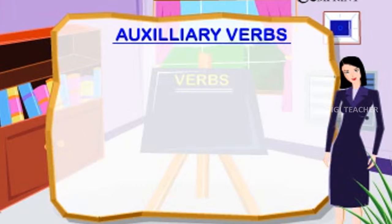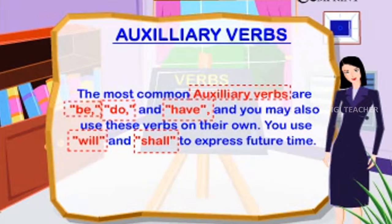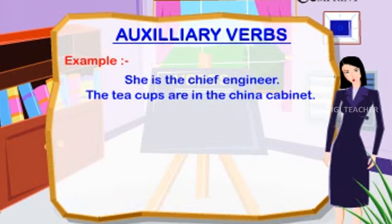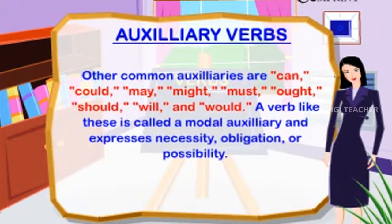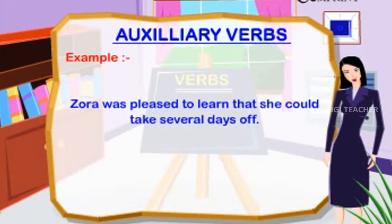Auxiliary verbs. The most common auxiliary verbs are be, do, and have. You use will and shall to express future time. Examples: 'She is the chief engineer.' 'The teacups are in the china cabinet.' Other common auxiliaries: can, could, may, might, must, ought, should, will, and would — called modal auxiliaries, expressing necessity, obligation, or possibility. Example: 'Zora was pleased to learn that she could take several days off.'